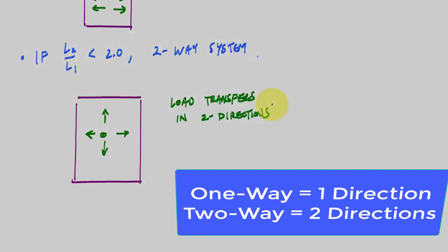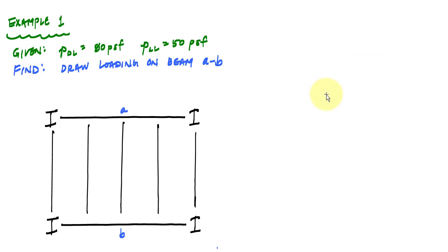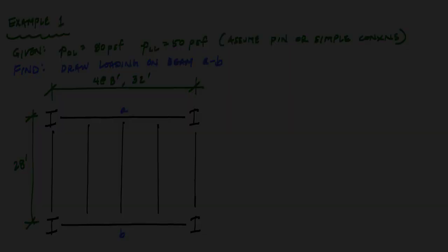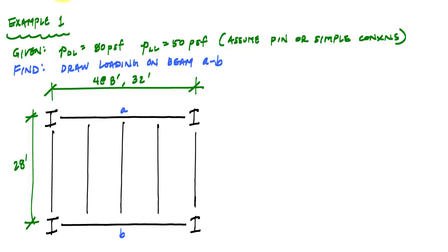All right, let's do some example problems. I've got this floor plan, the lines here are the arrangement of beams on this floor plan, and I have a dead load pressure of 80 PSF, live load pressure of 50 PSF, and I'd like to determine the loading on beam AB. I'll assume pin connections. Horizontally this is four spaces at eight feet each, this is 28 feet.